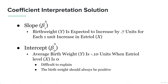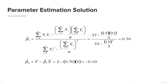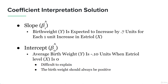Now let's interpret these coefficients to understand how we can model them in the given problem domain. The slope beta₁ tells us: birth weight y is expected to increase by 0.7 units for each unit increase in estriole. This gives us important information — especially if we're going to estimate or predict future birth weights. If we have the estriole levels, we can do that. Given the training data, we used it to get these two coefficients, and now we're going to apply that knowledge to data we have not seen yet.